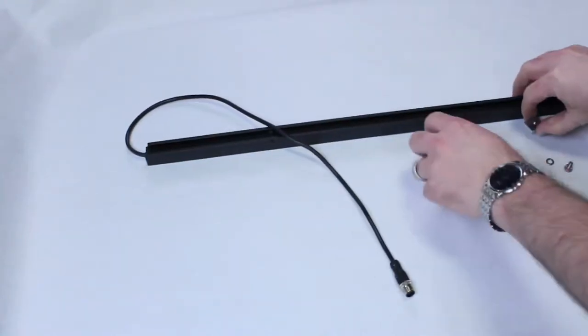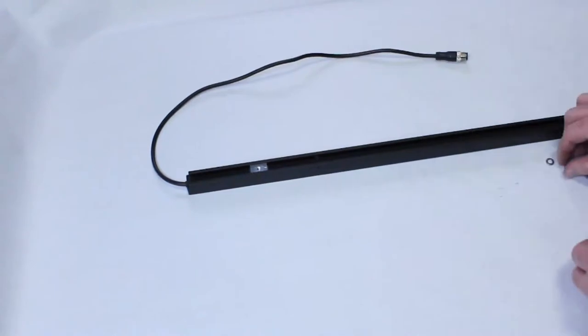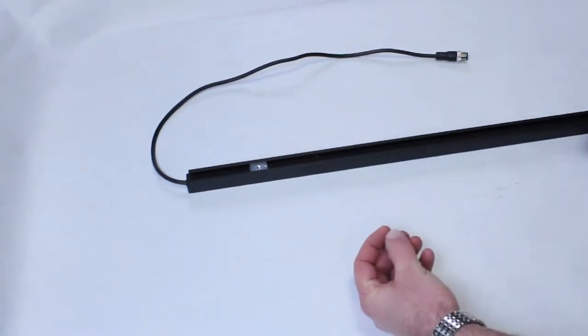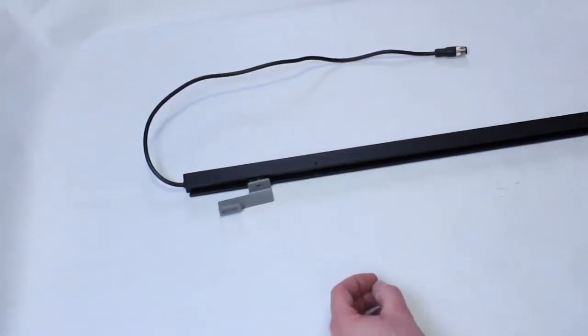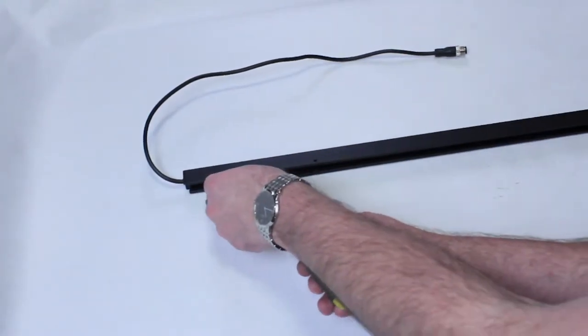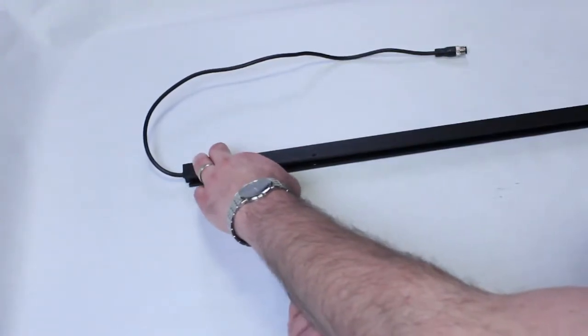Then flip the light curtain over and attach the upper mounting bracket. Be sure to only lightly tighten. You should be able to slide the upper mounting bracket up and down easily.